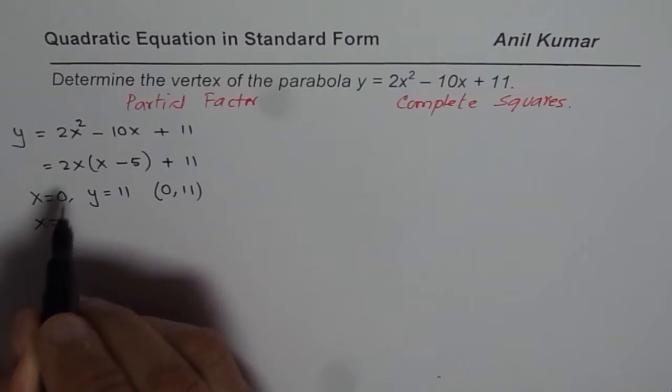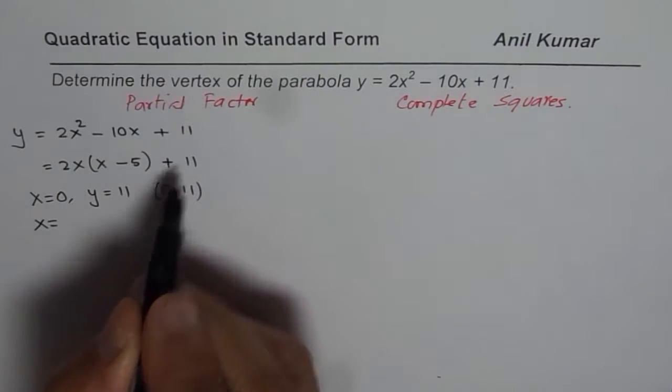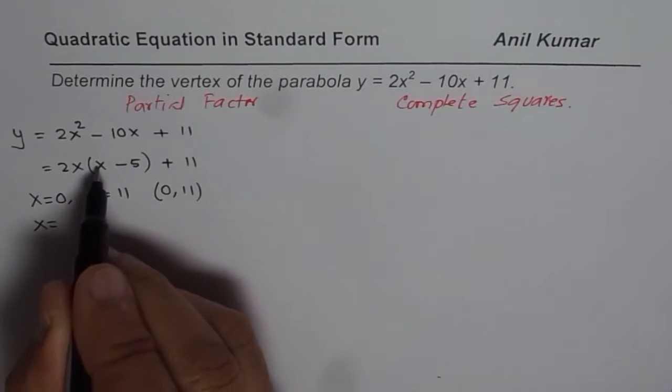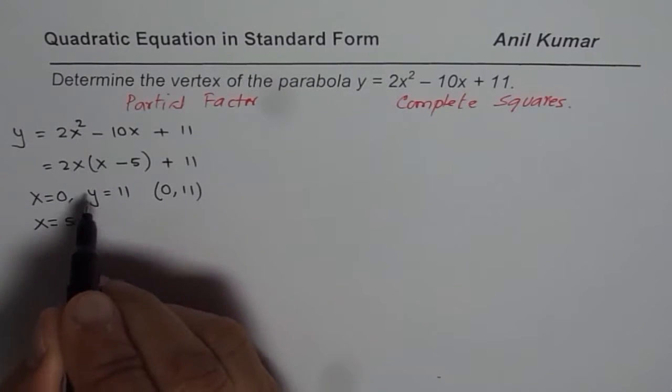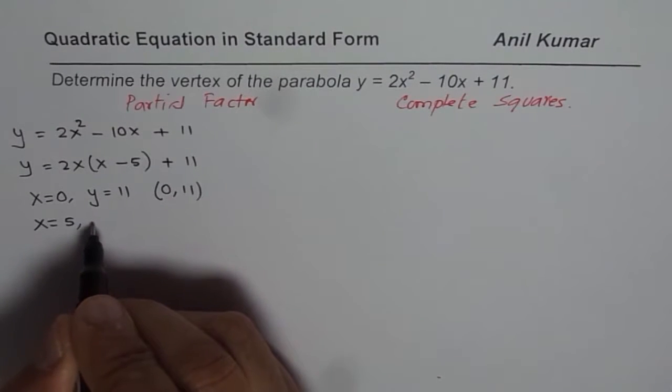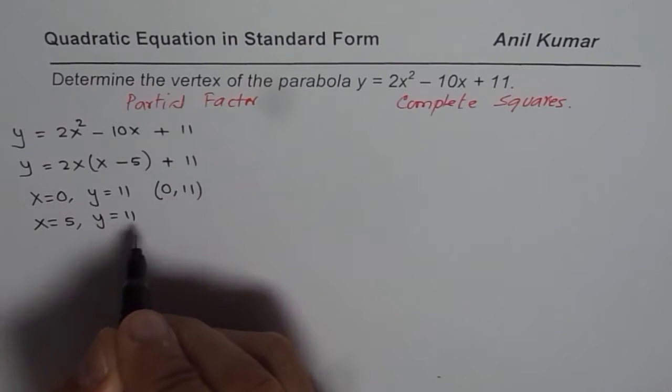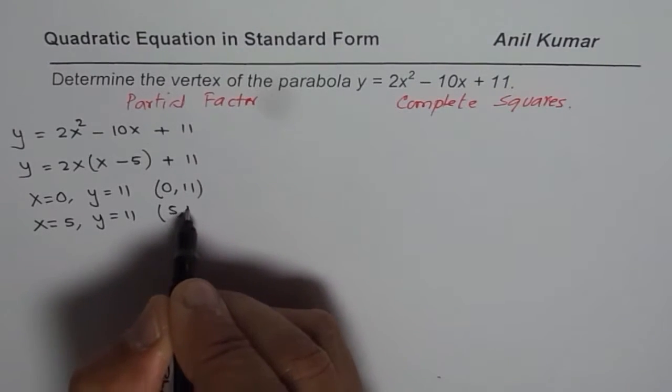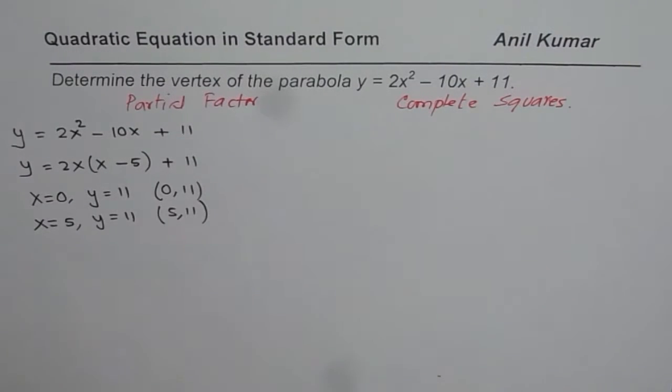That means the point (0, 11) lies on the parabola. And if x equals 5, because 0 times anything is 0, x minus 5 will be 0, so y will again equal 11. So (5, 11) is also on the parabola.